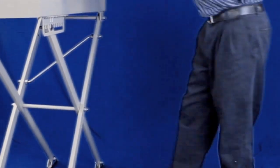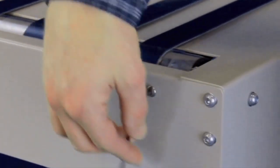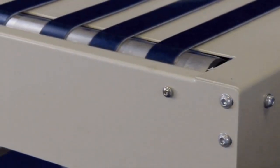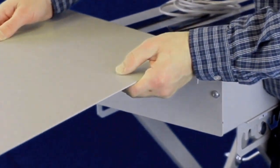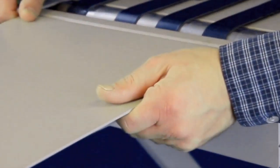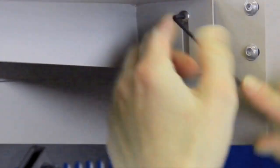Install the exit tray after loosening the two screws. Once the tray has been placed into position, tighten the screws.